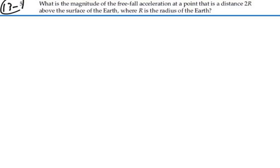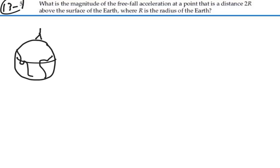Let's imagine what normally happens when we calculate the free-fall acceleration. If we have the Earth and you're standing on it, your gravity is due to the gravitational attraction between you and the Earth. You have the mass of the Earth located at its center of mass, your mass located on the surface, called little m, and the distance between you is the radius of the Earth.